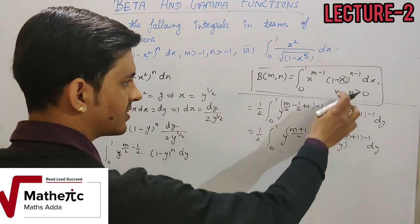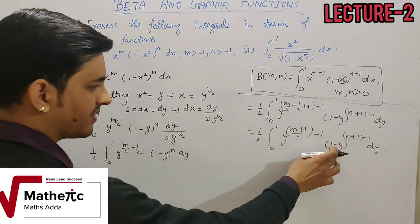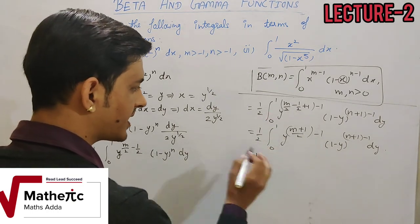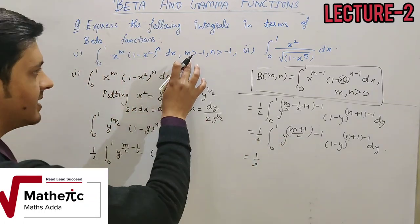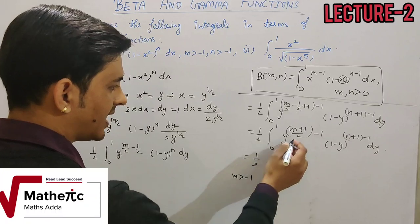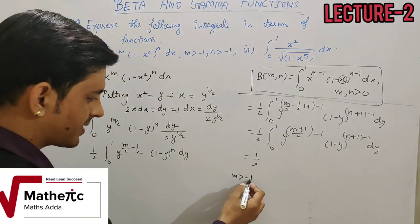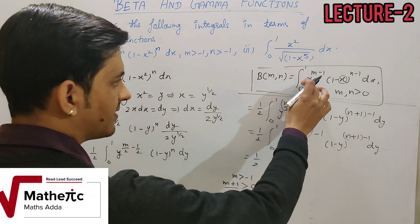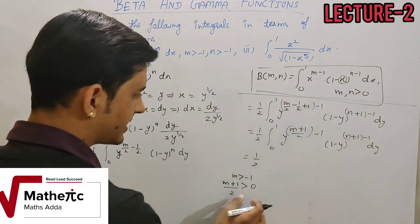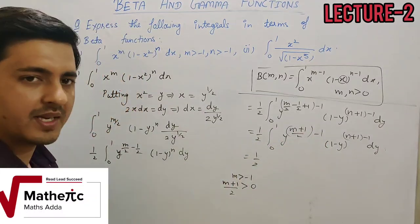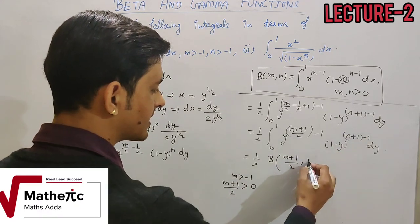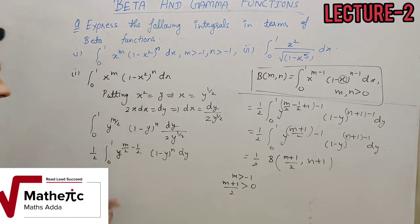Now comparing this integration with the beta function formula, the minus-1 terms appear in both powers as required. The variable is y, the limits are 0 to 1, and all conditions of the beta function are satisfied. Also, since m > -1, we have m+1 > 0, so (m+1)/2 > 0, confirming the positivity condition. Therefore, this first integral converts to (1/2) · beta((m+1)/2, n+1).